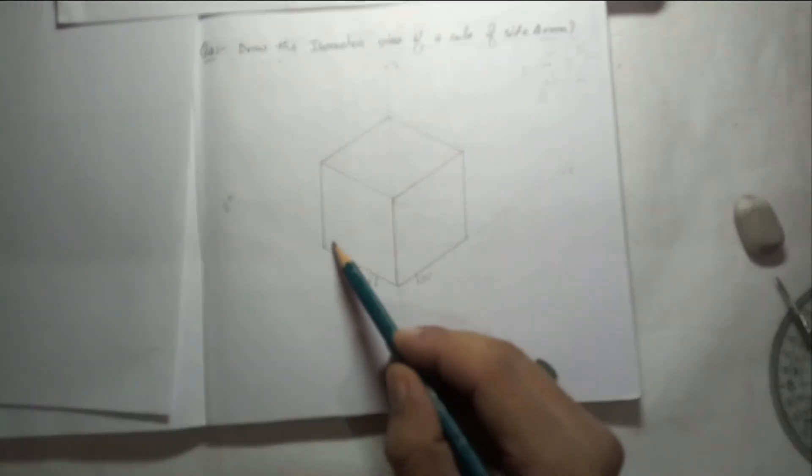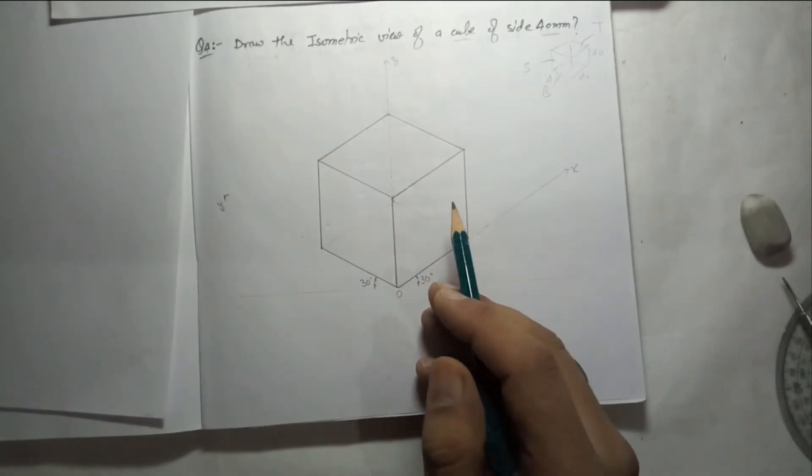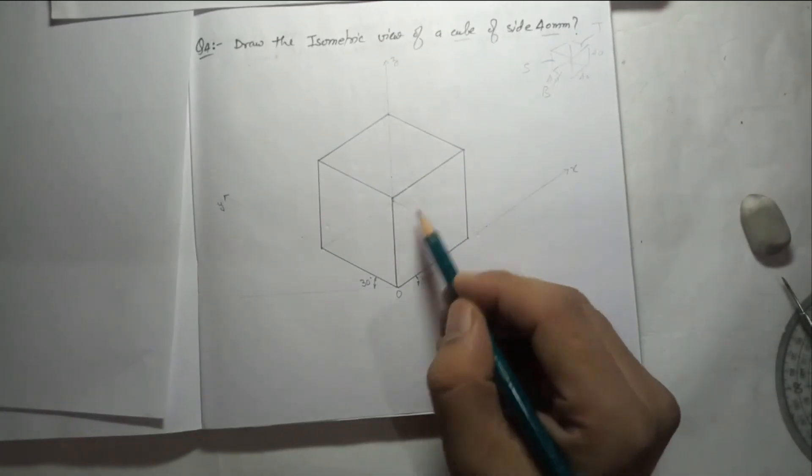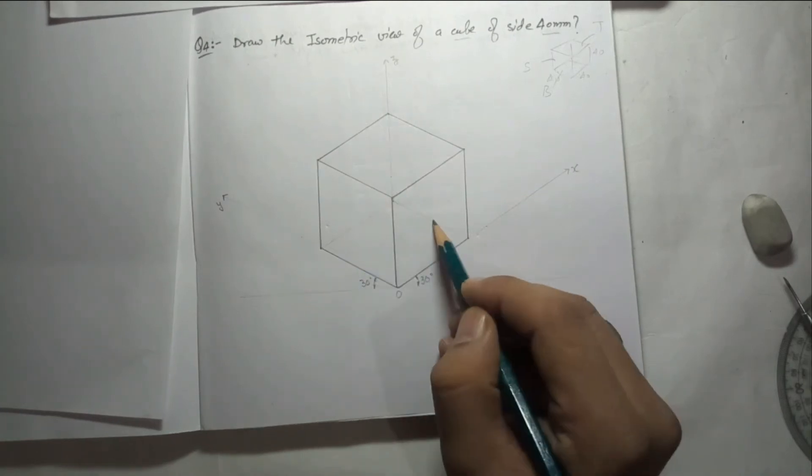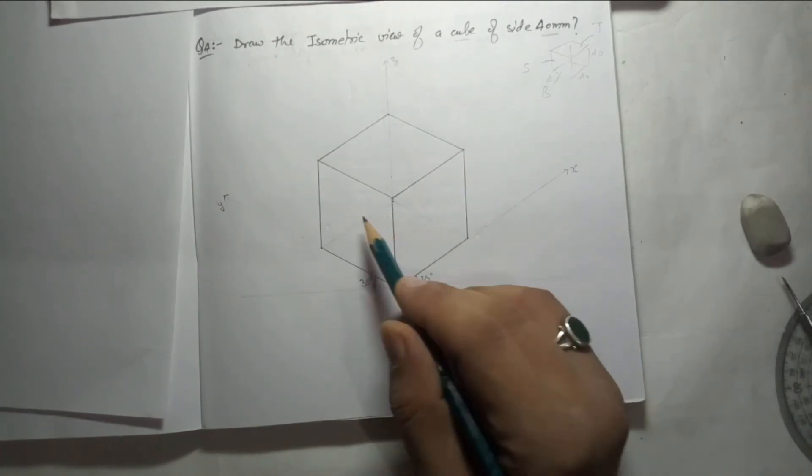Now in this diagram, why I have not made this line and this line dark? Just try to imagine a solid object - a solid part is there. These rear edges, these three edges will not be visible. Only this will be the visible part.